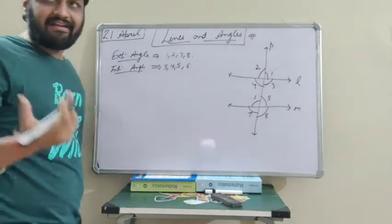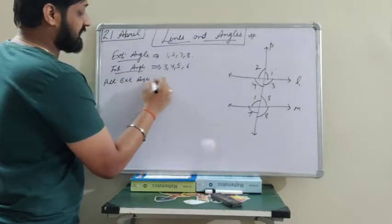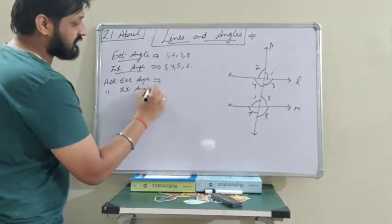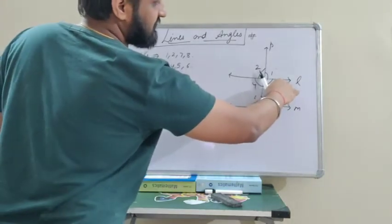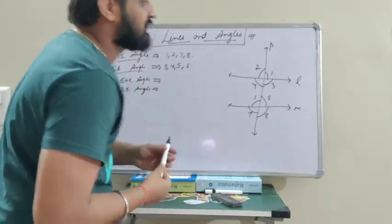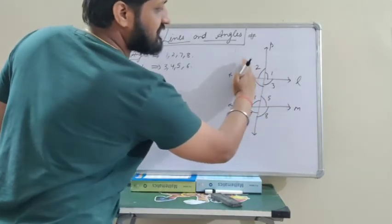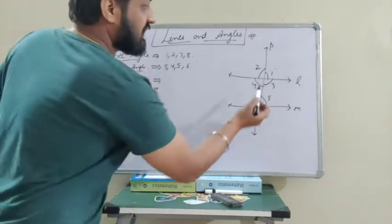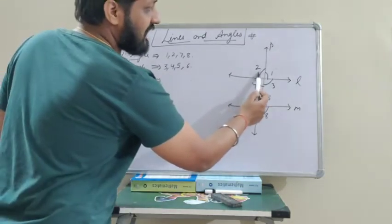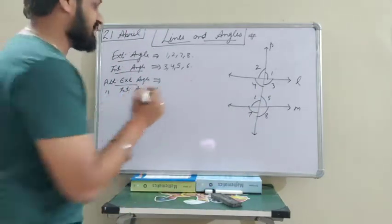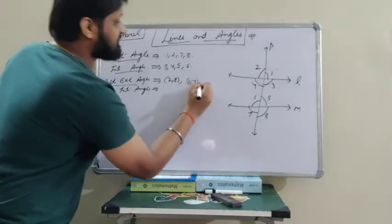Now, alternate exterior and alternate interior angles. Alternate means one after another, but in this line you have to see the crossings. The crossing should be there — one angle should be on one side and another angle on the other side. Alternate exterior angles means the angles should be from the exterior. So 2 and 8 is the first pair, and 1 and 7 is the second pair.